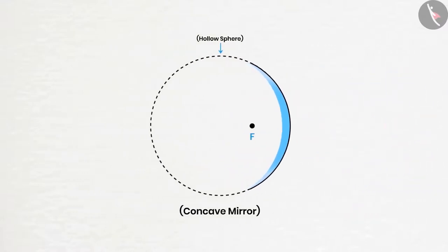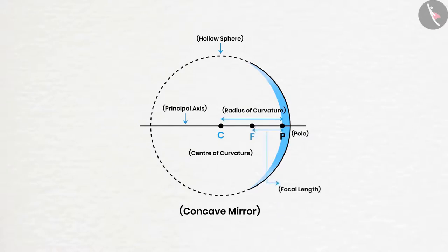As we know that a spherical mirror is the part of a sphere and every sphere has a center. This center is known as the center of curvature of that spherical mirror. If a line is drawn from the center of curvature and focus to the mirror, it will always pass through the center point of the mirror, which is known as pole. This line is called the principal axis and the distance from the center of curvature to the pole is called radius of curvature. The distance between the focus and the pole is known as focal length and the circular distance is called aperture.